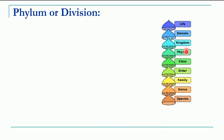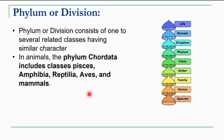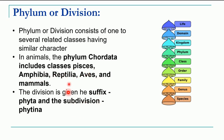The category above class is phylum, or in plants it is called division. Phylum or division consists of one or several related classes. Several related classes come together to give rise to a phylum, showing similar characters. In animals, phylum Chordata includes different classes like Pisces, Amphibia, Reptilia, Aves, and Mammalia. The division in plants always has a suffix -phyta, and subdivision has the ending -phytina.